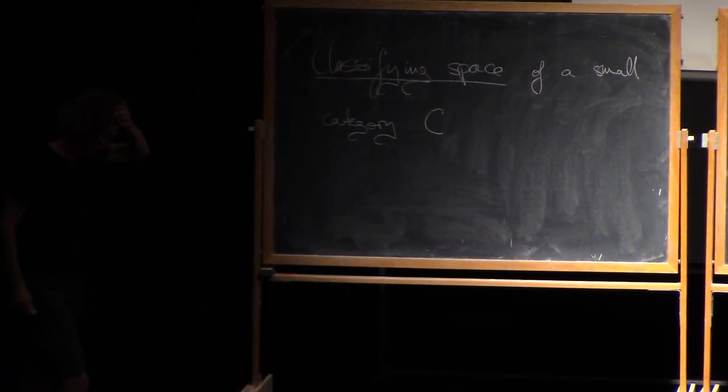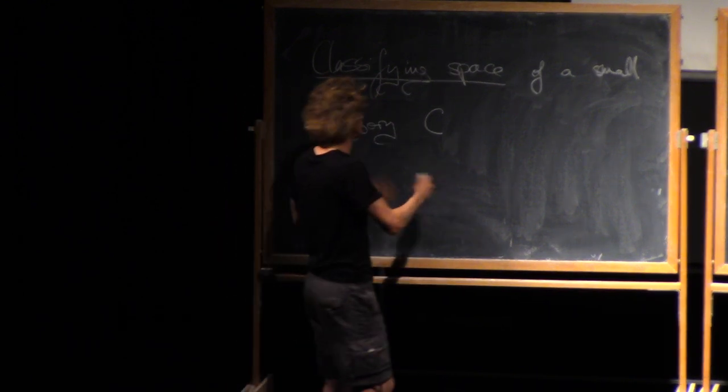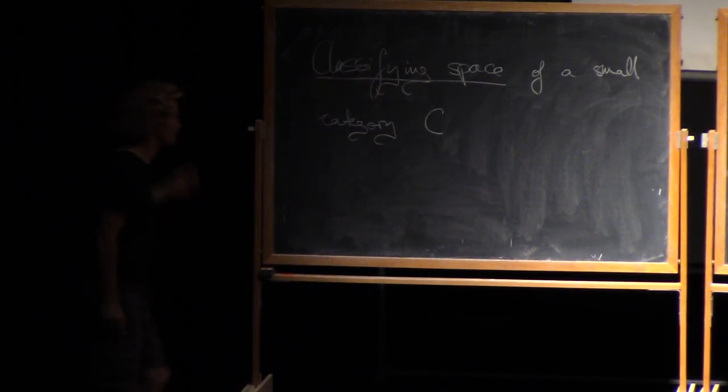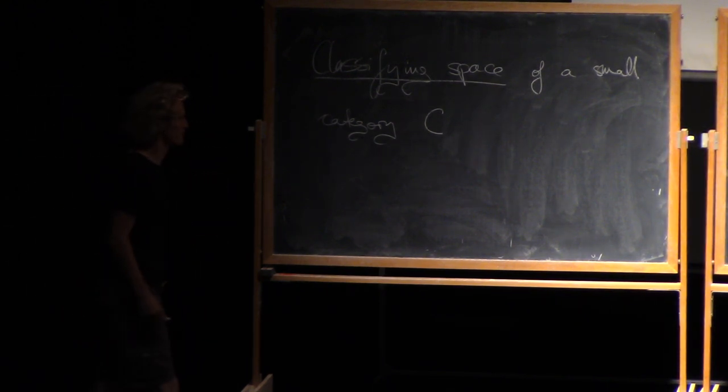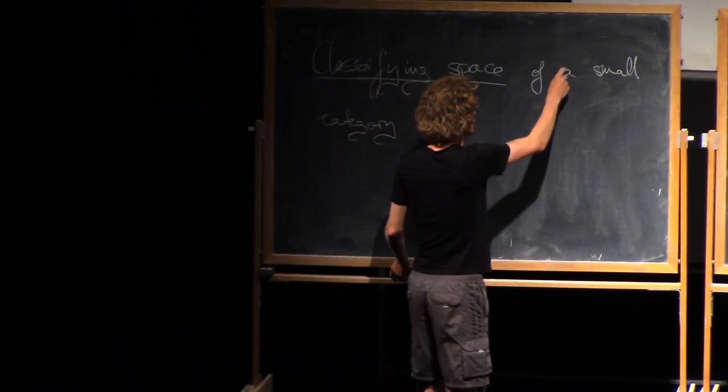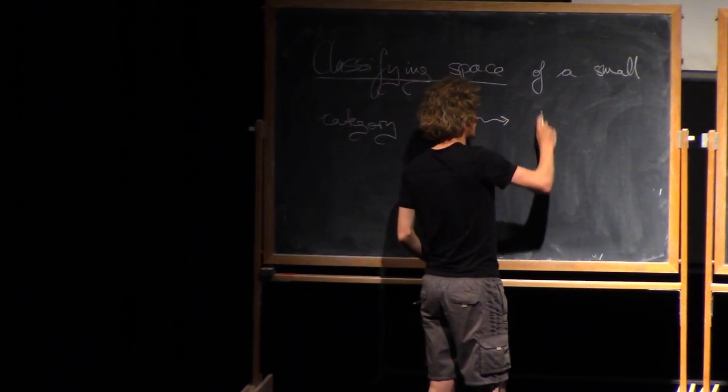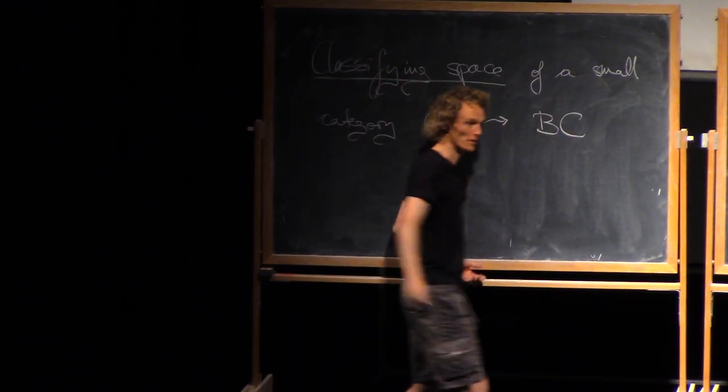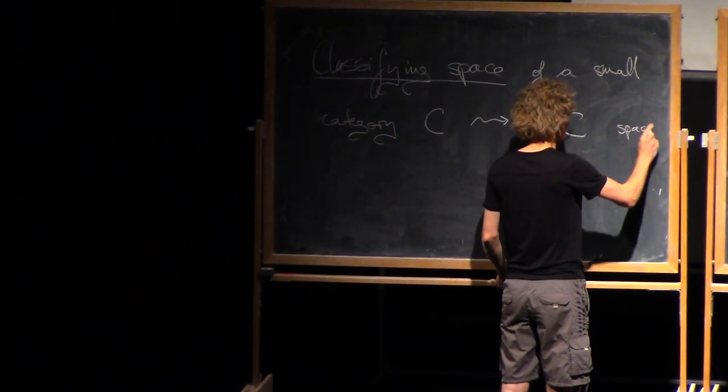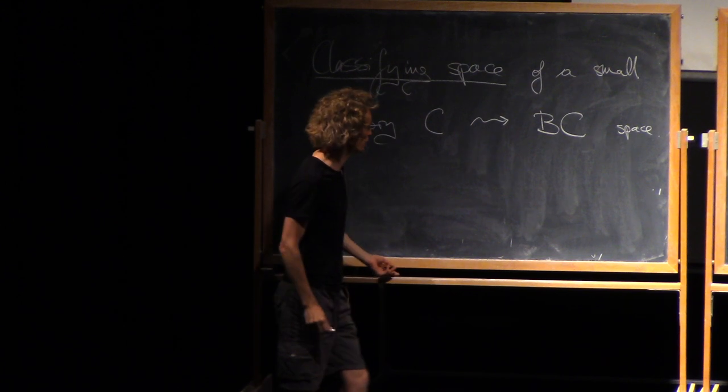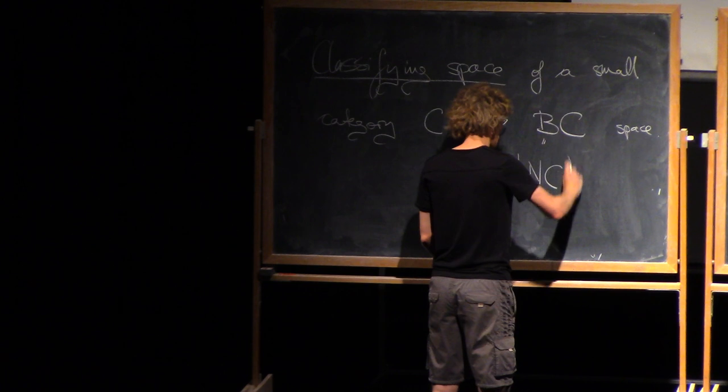So classifying space of a small category C. So small, as I said, means a set of objects. The category of sets is not small, because there's no set of all sets. So you have a small category, there's a topological space that I write BC. That's usually defined in two steps. First, you take the nerve of C, and then you take the geometric realization of that.